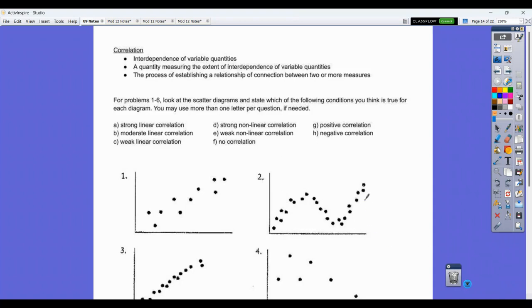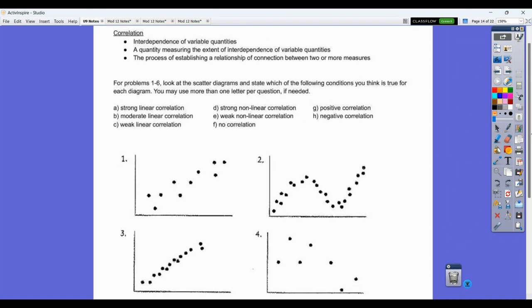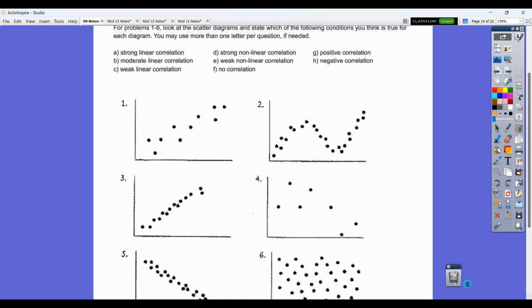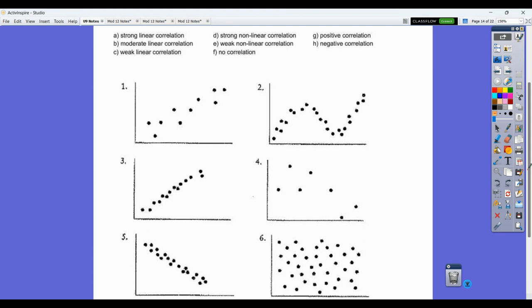Okay, I'm on page 14 of the Statistics Unit 9 stuff here. So talking about some correlations here, for 1 to 6, look at the scatter diagrams and state which of the five conditions you think is true for each diagram. You may use more than one letter per question if needed. So we're looking at all of these and we're trying to figure out what we have here.